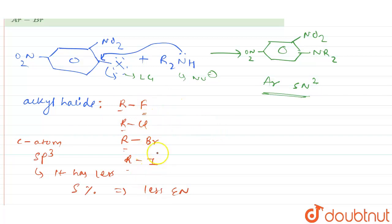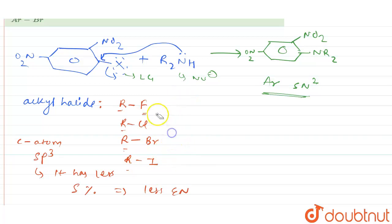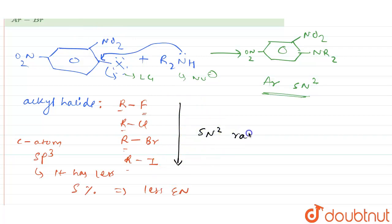Because of this high electronegativity difference, iodine has a better tendency as a leaving group and is removed easily. So iodine is a good leaving group in alkyl halides, and as you go down the group the SN2 rate is increasing.